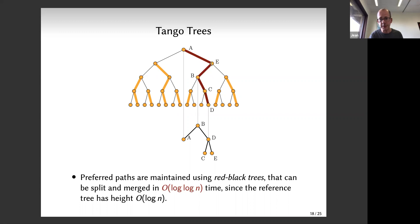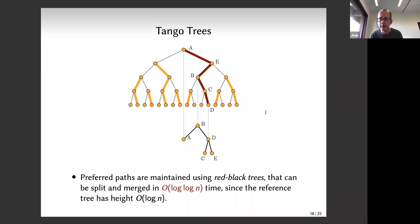Each path in the decomposition is represented by a small binary search tree (red-black trees in the original implementation). Whenever you split or merge a preferred path, you split or merge red-black trees - a standard CLRS operation running in logarithmic time. Since the reference tree has height log n, each path has size at most log n, so splits and merges take O(log log n) time. You do a constant number per preferred child update, achieving O(log log n) competitive ratio.